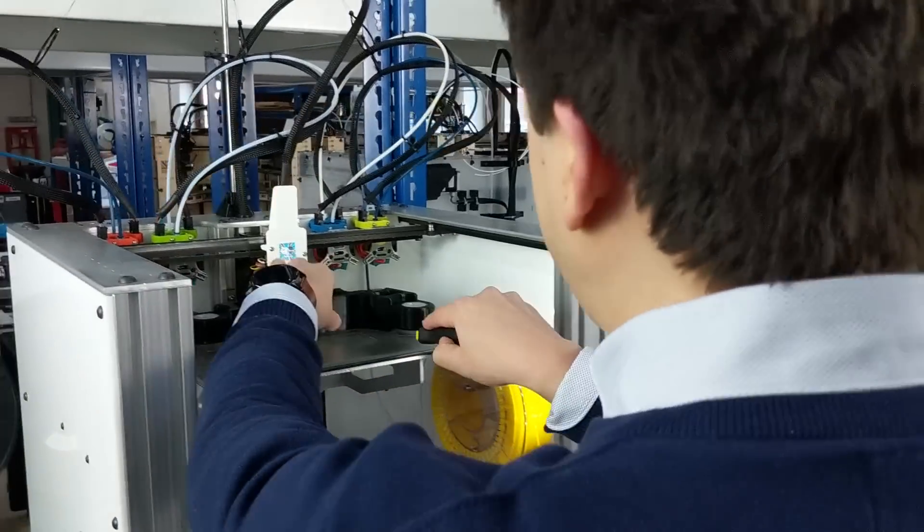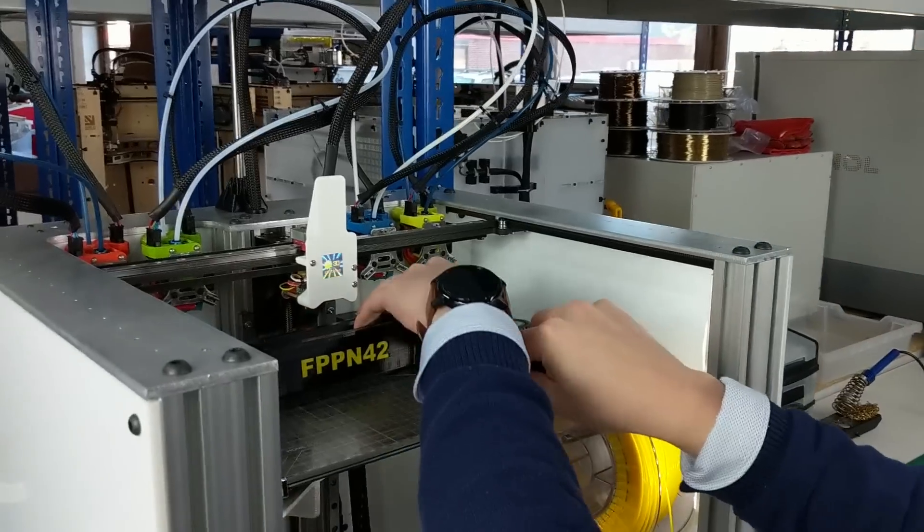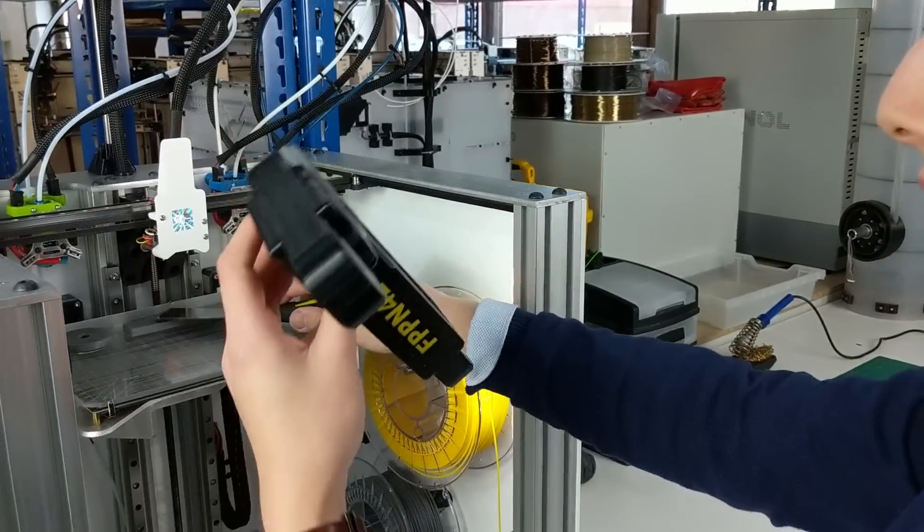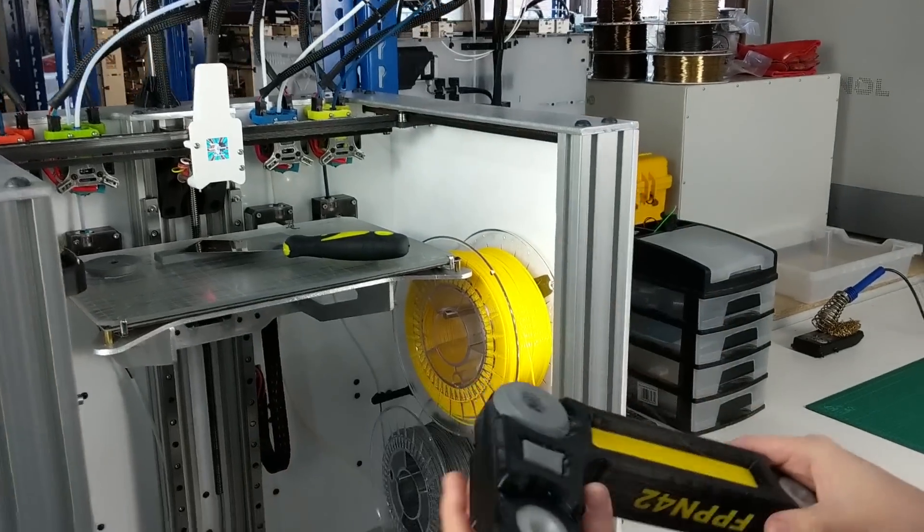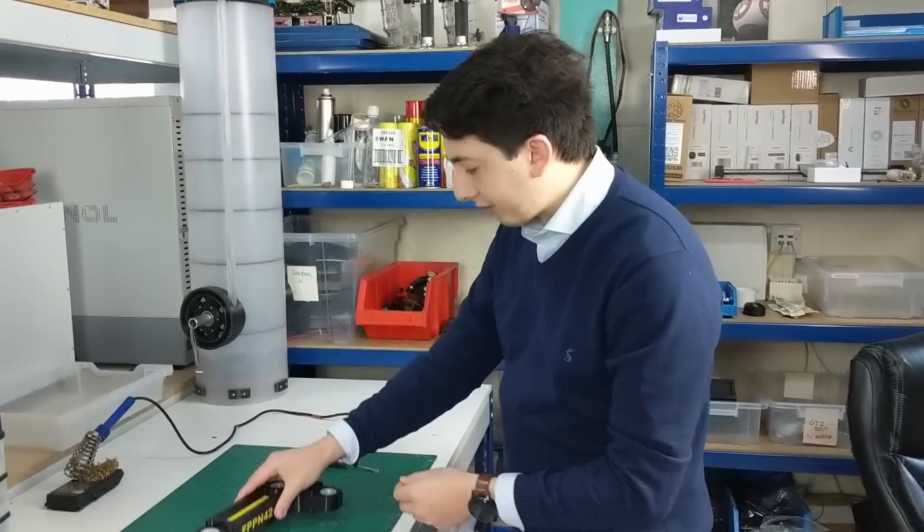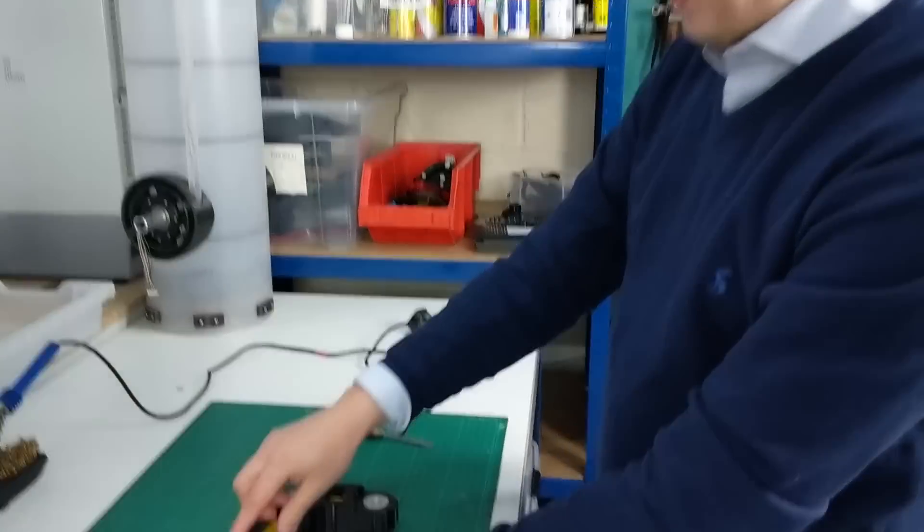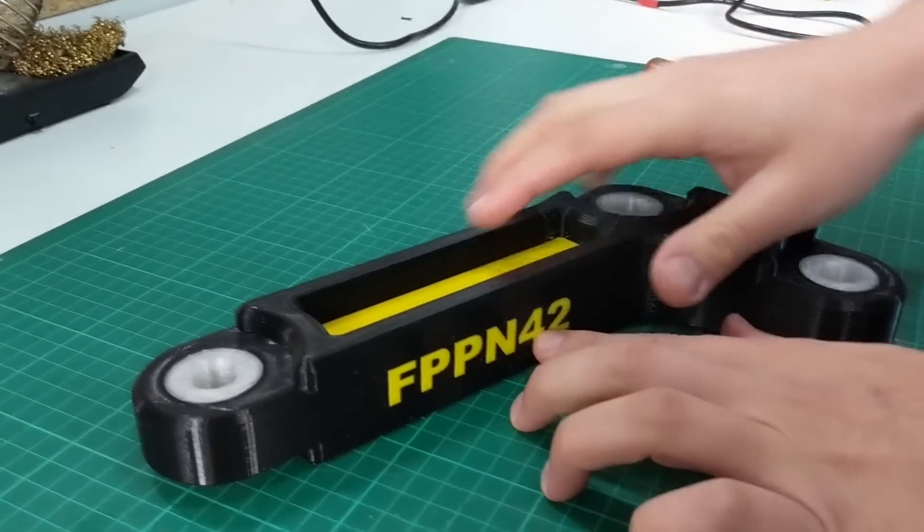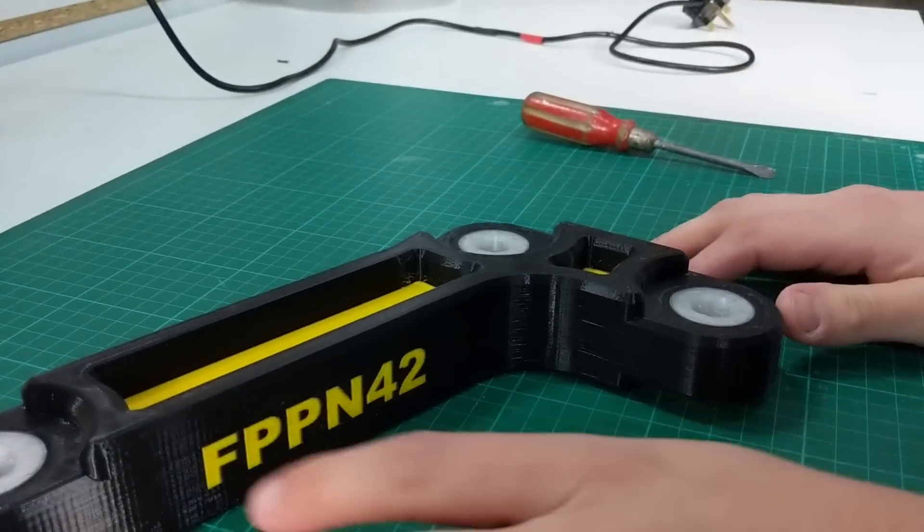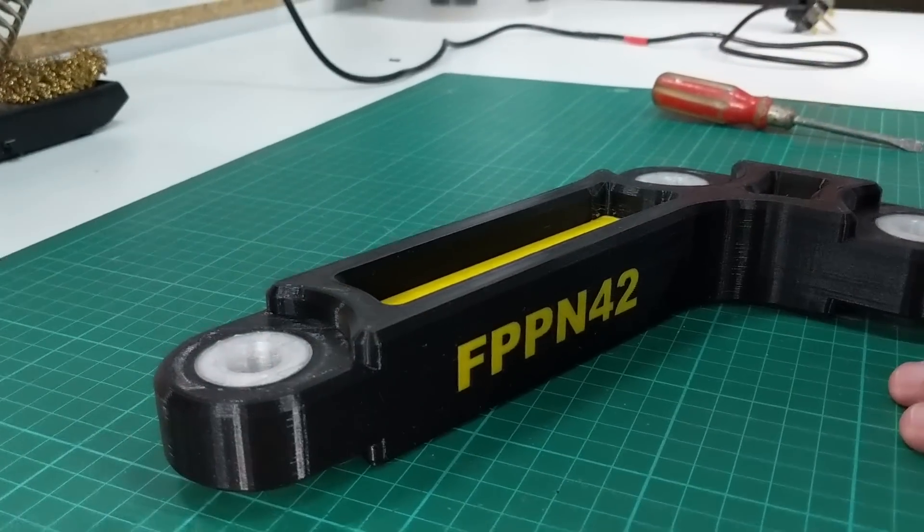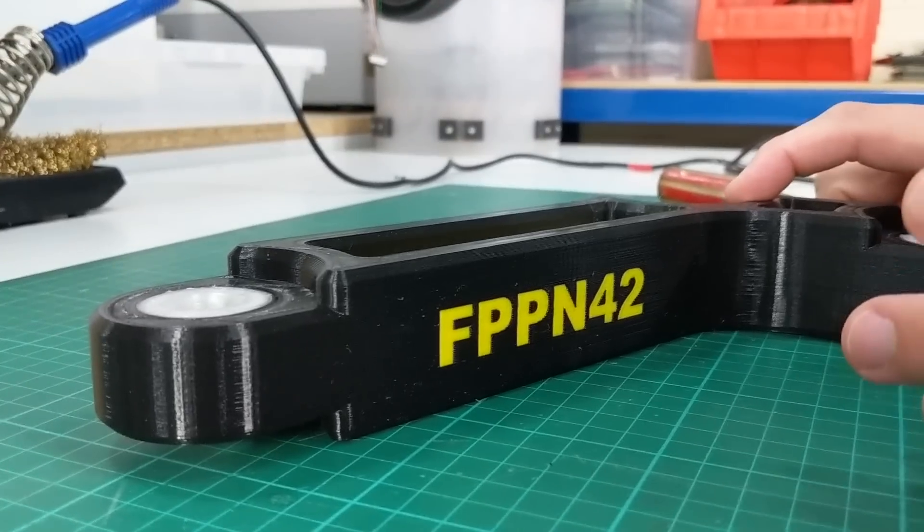What we have here is a demonstration part printed in three different materials. We've got black PLA for the main structure, yellow PLA for the highlights, and nylon bushings where the axles would go to really show the true power of multi-material printing.